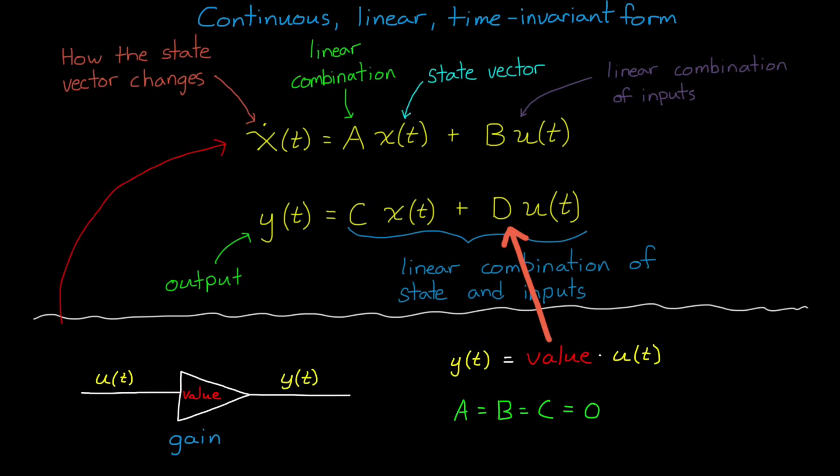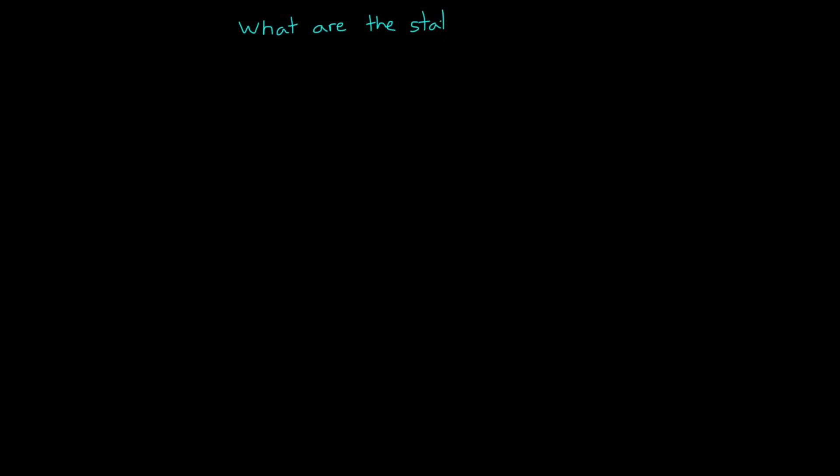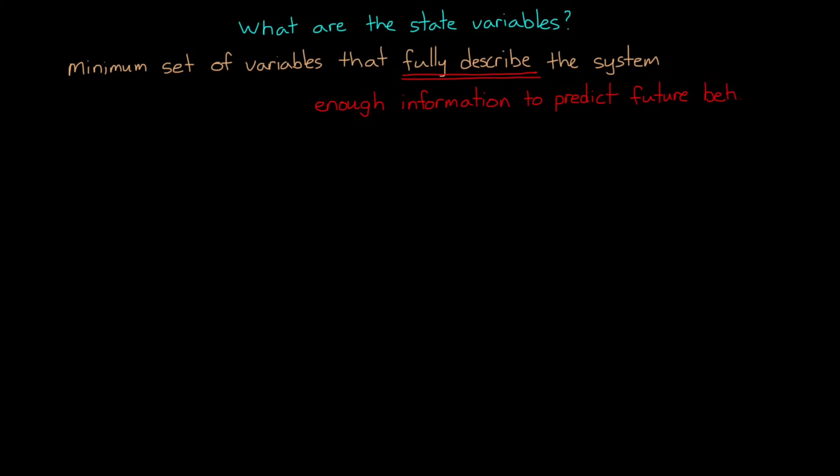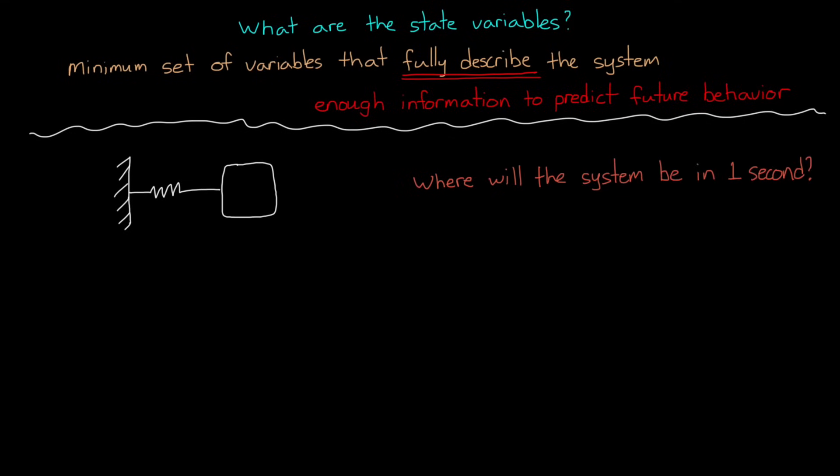As you might have noticed, the state variables are the key to the whole thing. They show up in three places and are the part of the representation that I think is the hardest to conceptualize. Therefore, understanding what they are is really important. The state variables are the minimum set of variables that fully describe the system. Fully described means that we have enough information about the changing part of the system, or the variable part, that we can predict the system's future behavior.